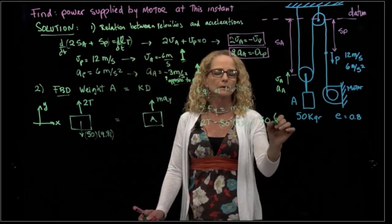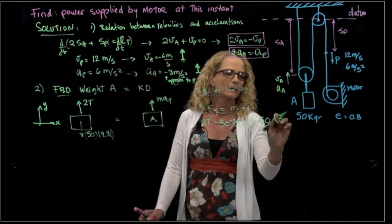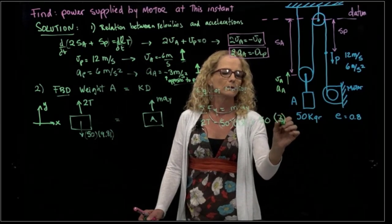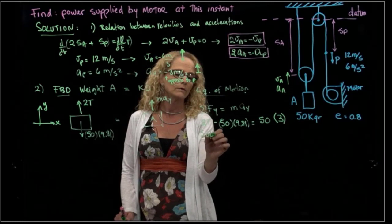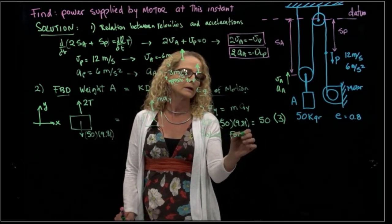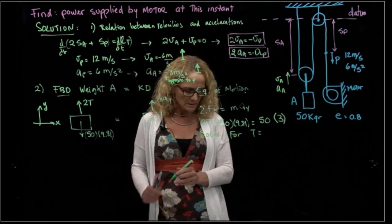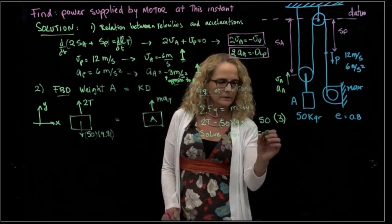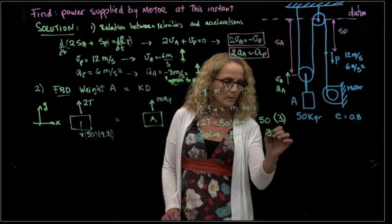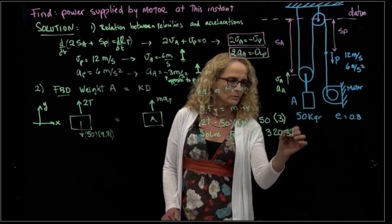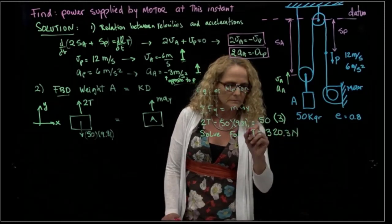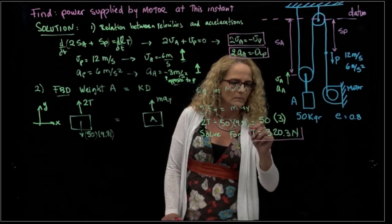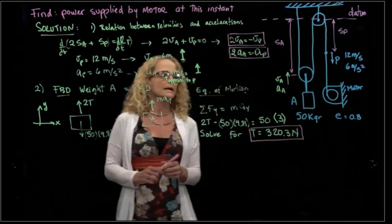Okay, so I have my acceleration, so I'm going to write that as a positive 3. So from here, I can solve for T, solve for the tension, which is, and I have it right here, 320.3 Newtons. So that's my tension. So that's the second step.